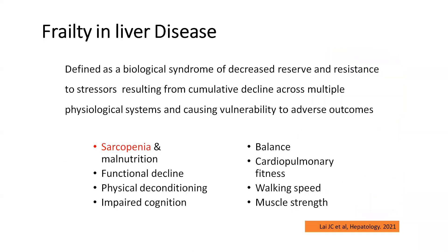Then comes the concept of frailty in liver disease. Frailty and sarcopenia have many things in common. In fact, sarcopenia is one component of frailty, where the physical component of frailty includes sarcopenia and malnutrition. The other components of frailty include functional decline, physical deconditioning, impairment of cognitive function, and decrease in the overall functionality of the patient.